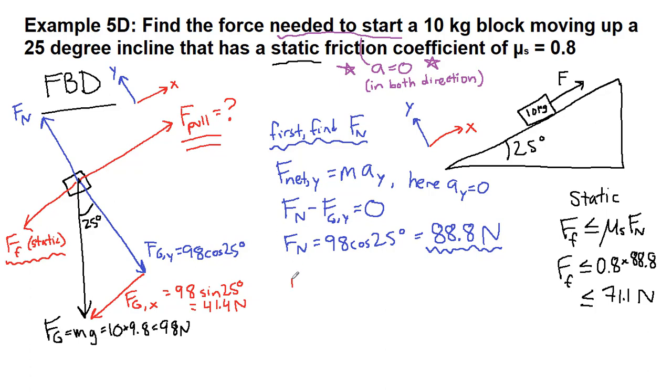So now we want to look in the x direction. The breaking point, the needing to start moving, means that we are looking at the case where here we want the friction force to be equal to 71.1 newtons. Because we're pulling as hard as we can and we're going to make it work up to that absolute maximum.